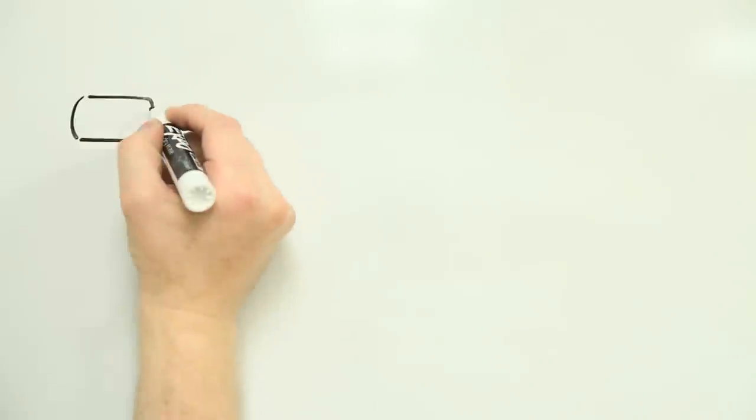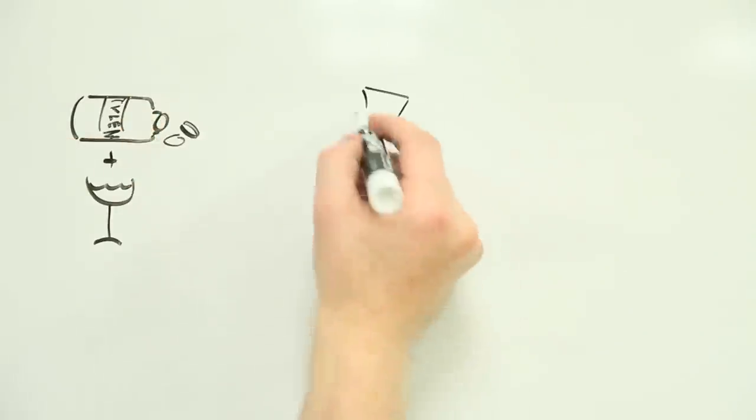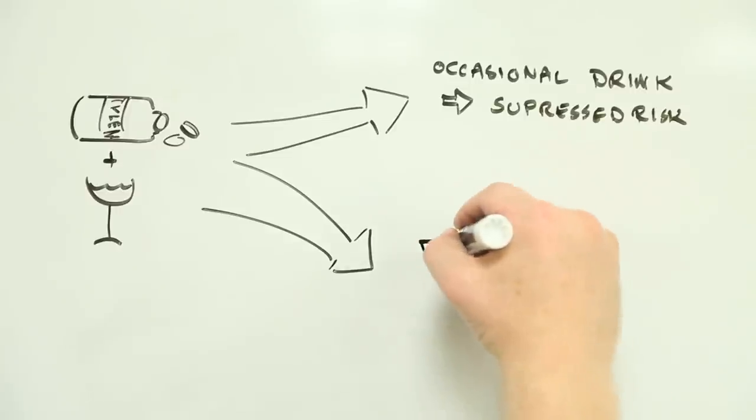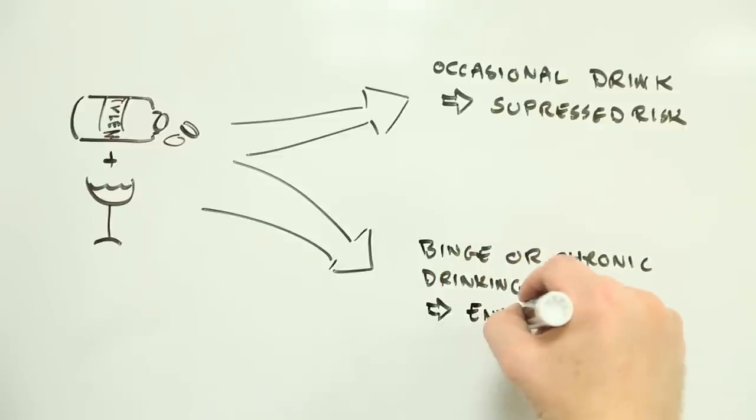The bottom line is that taking multiple drugs together can have complex and not always obvious consequences. In this case, the science suggests that an occasional night of social drinking with friends might actually curb the potential harm associated with taking too much acetaminophen. On the other hand, combining acetaminophen with a chronic drinking habit or binge drinking is most definitely bad news for your liver.